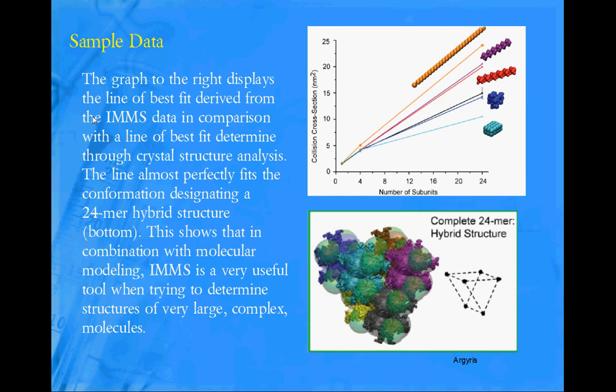Here is a continuance of that data. The collision cross section, which I mentioned earlier, is determined in the ion mobility phase. And based on the number of subunits in the structure, you can generate a trend line. You can also do this using crystallographic methods. The colored orange, purple, red, blue, and light blue colors are the ones that they determined through crystallographic methods. But that black trend line was actually determined using an IMMS. And the fact that these two trend lines almost perfectly overlay on each other and they were done by two different techniques proves that this 24-mer hybrid structure using the triangles, the triangle crystallographic shape, is the actual true shape of what is the most common DnaB helicase. And that right there proves that the IMMS is a very great machine when you're trying to determine the geometry and architecture of very large, complex molecules.